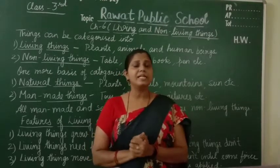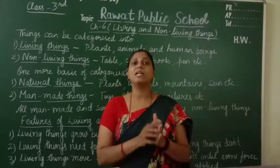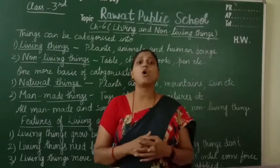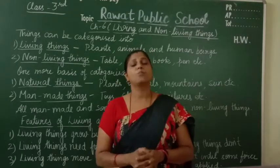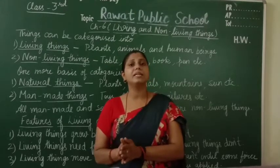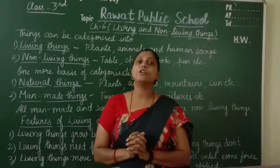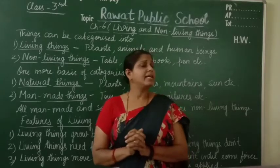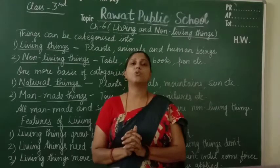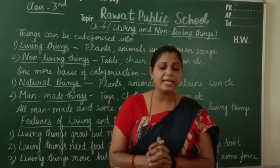Obviously, plants and animals are living things. They have the characteristics which all living things show. But the pen, duster, table, chair — these all are non-living things. They don't show the characteristics of living things.